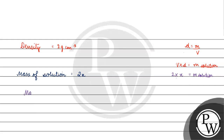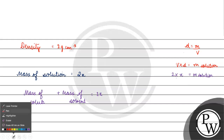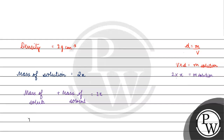Mass of solution is basically equal to mass of solute plus mass of solvent. We know mass of solvent. So mass of solute will be equal to mass of solution minus mass of solvent.